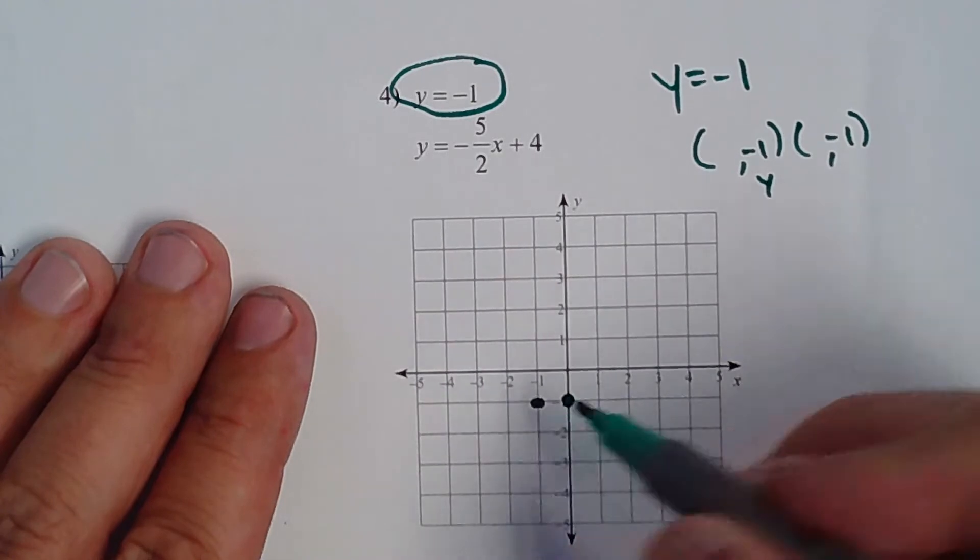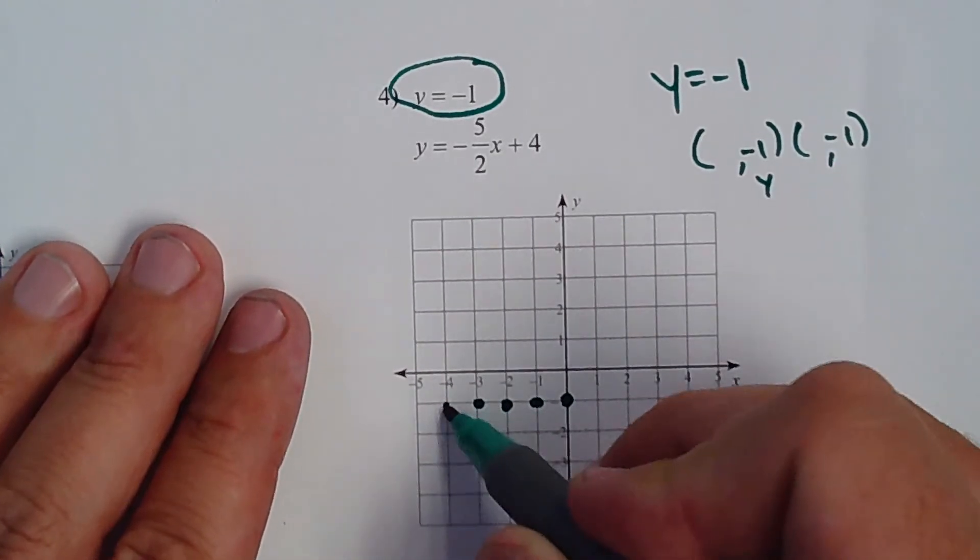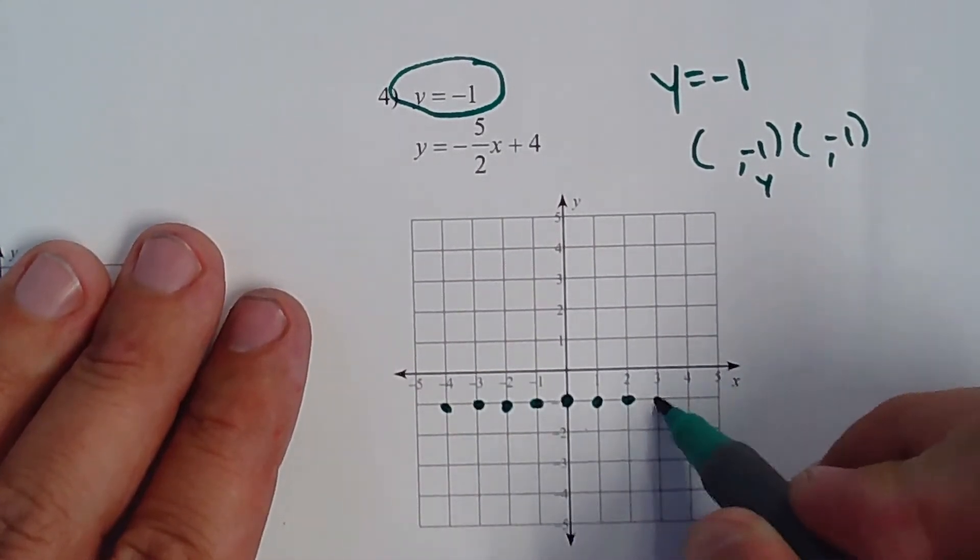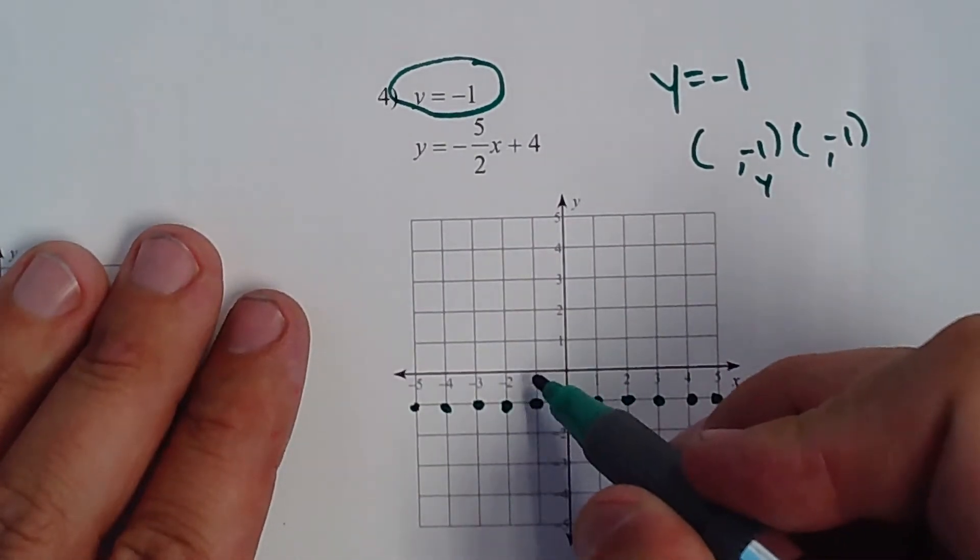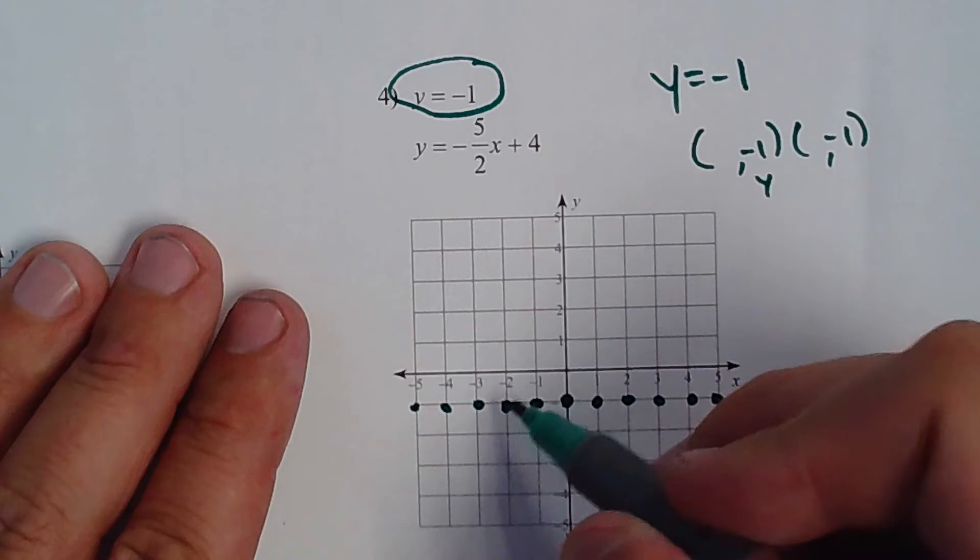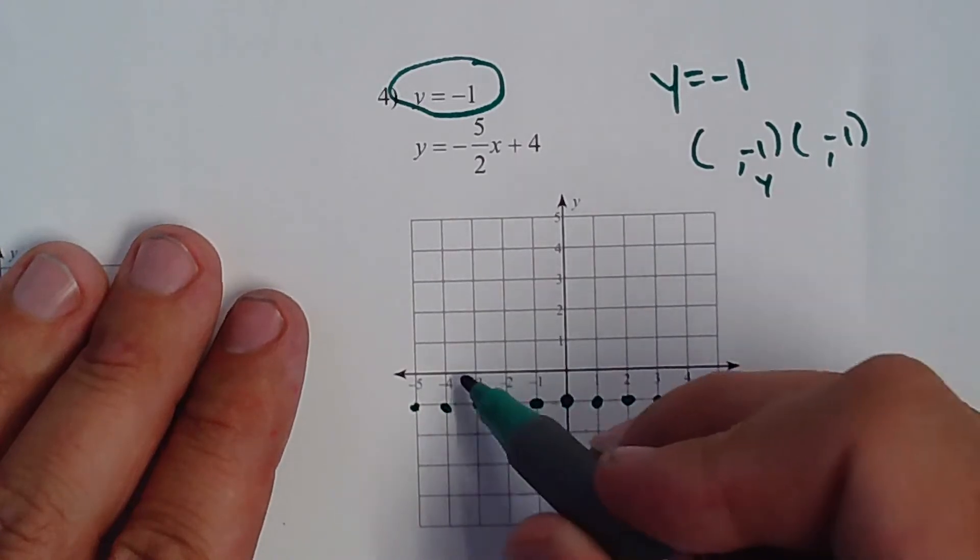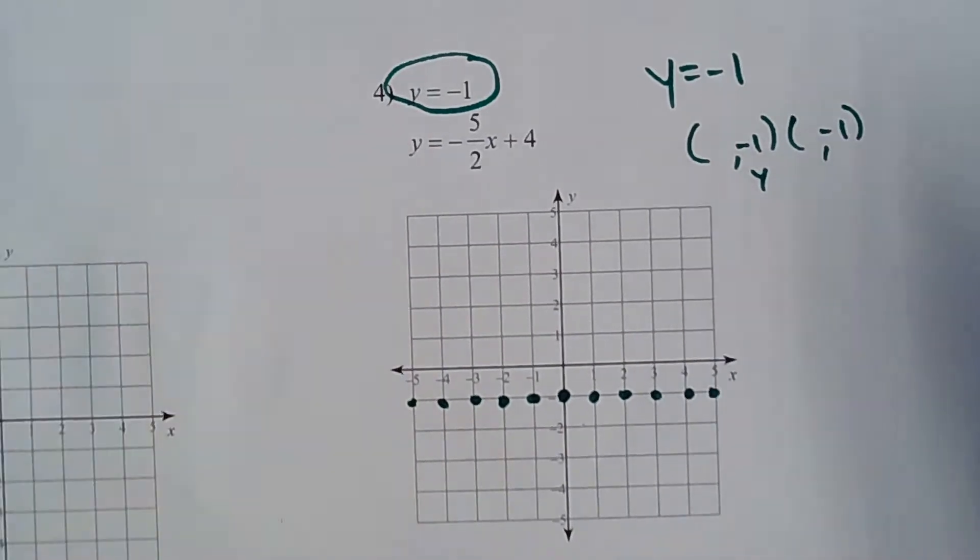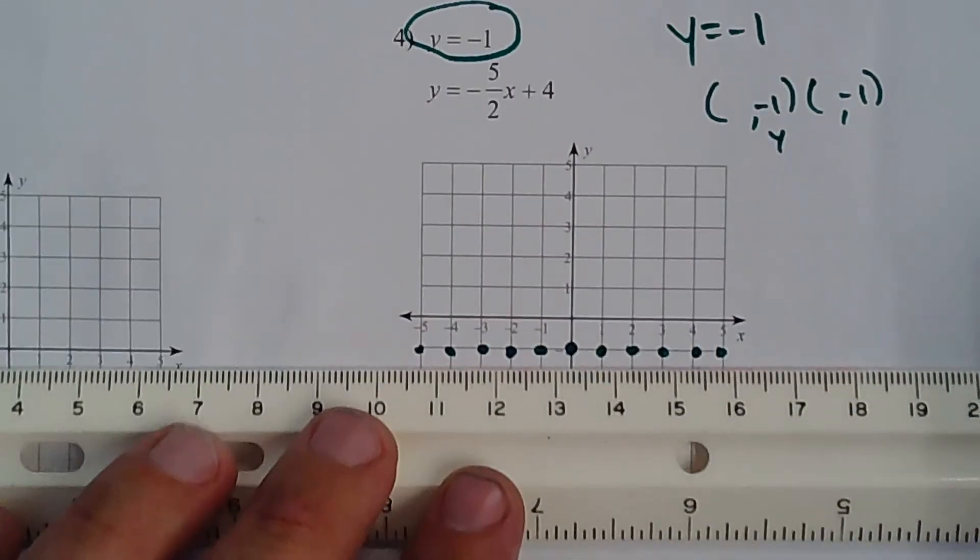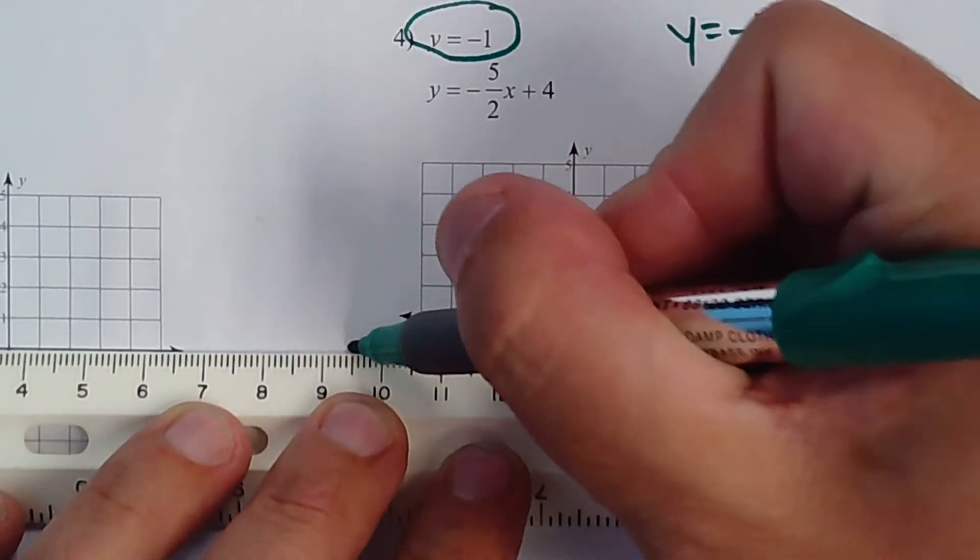So if you look at all these points on this line, which all of these points have the same Y coordinate, not X coordinate, this would be negative 1, negative 1. Negative 2, negative 1. Negative 3, negative 1. Negative 4, negative 1. Negative 5, negative 1. They all have negative 1 as their Y.